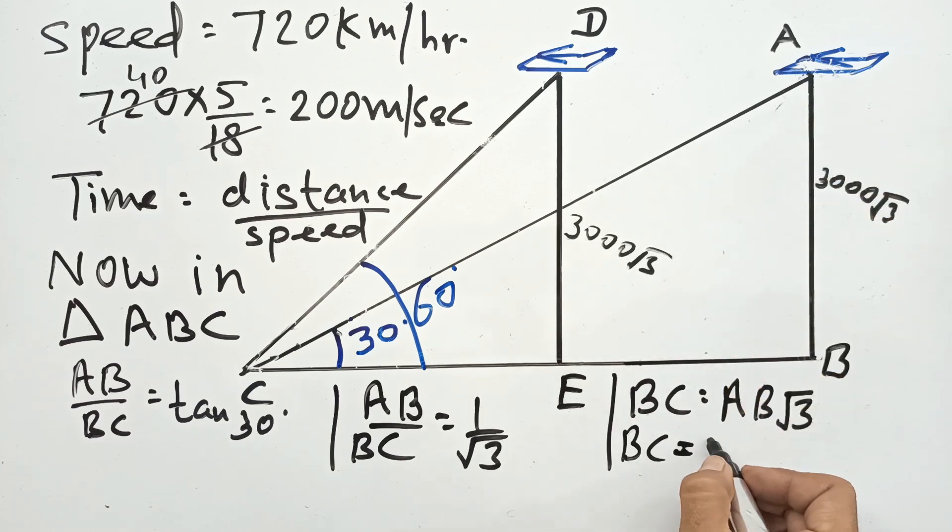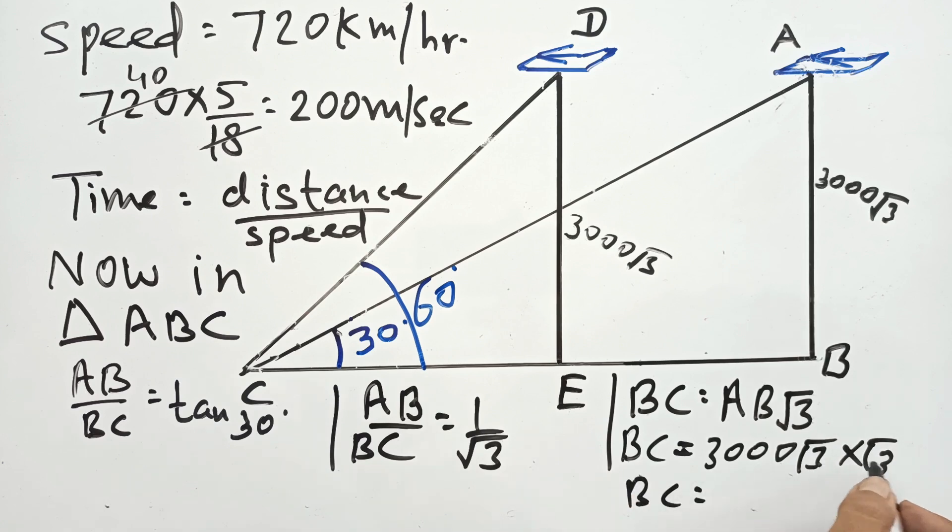AB is 3000√3 meters. Tan 30 equals 1/√3, so BC equals AB×√3 = 3000√3×√3 = 9000. So BC is 9000 meters, this distance.